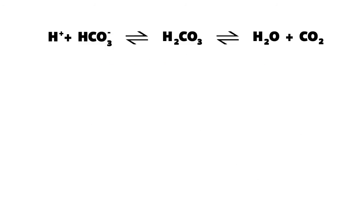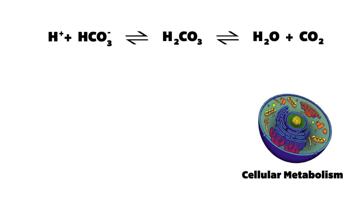So let's break this down. This is the equilibrium equation for how hydrogen ions are carried in our body. The byproduct of cellular metabolism is carbon dioxide, which mixes with water in equilibrium with carbonic acid, which is also in equilibrium with bicarbonate and hydrogen.